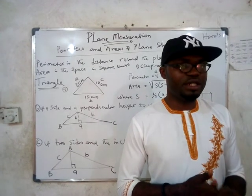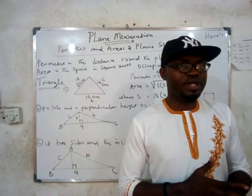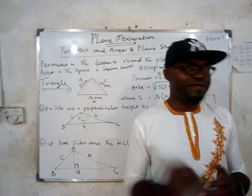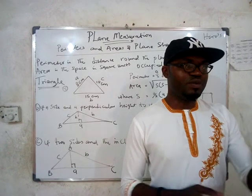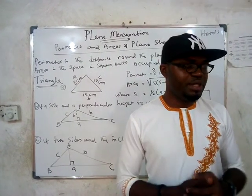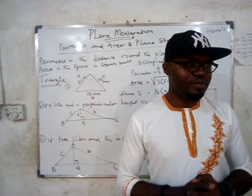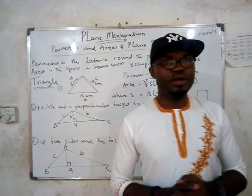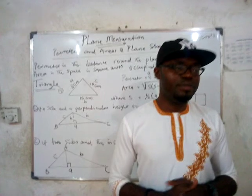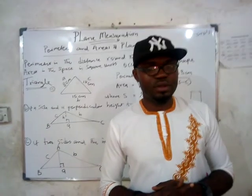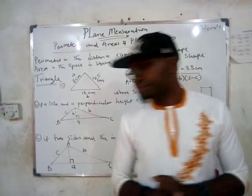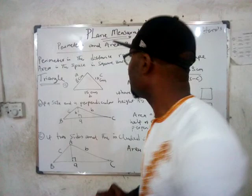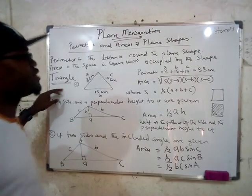And we know what plane shapes are — the shapes that don't have depth. Examples are triangle, trapezium, parallelogram, square, rectangle. Today we're going to be starting with that of a triangle.